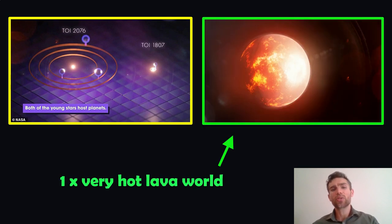Around the other star, TOI 1807, was one very hot lava world, a terrestrial planet that is suspected to have a surface of molten lava. That one orbits in about 10 hours around its star, so very close to its star which is why it's so hot.